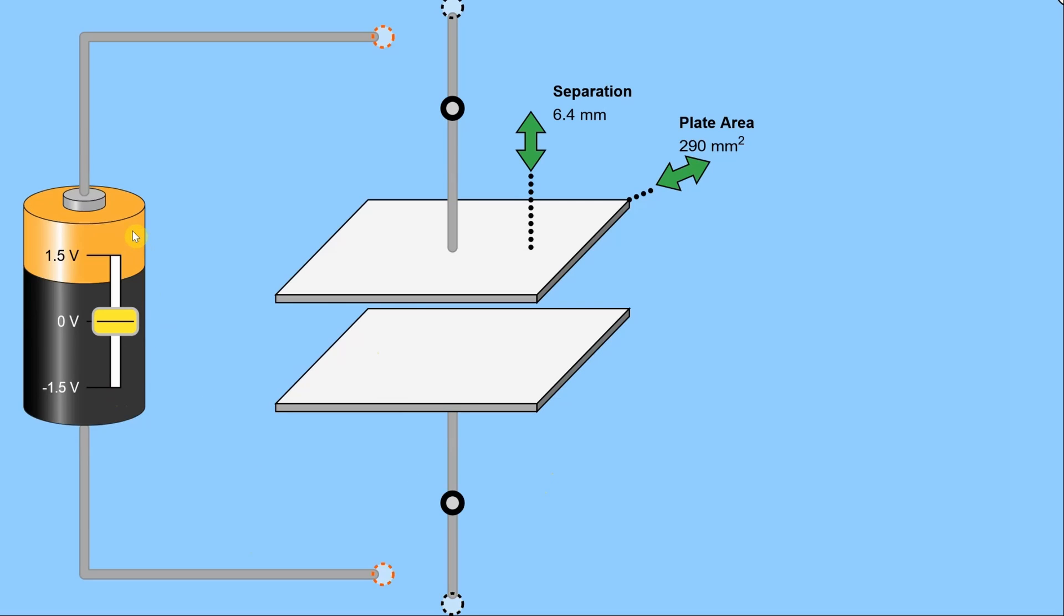And specifically what we're looking at here is an animation that explores capacitance. We see over on the left hand side is a battery with a variable voltage connected through a switch which is currently open to these two conductive parallel plates that are separated by air. There's an air gap between them. So let's go through a bit of an experiment.